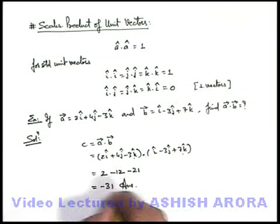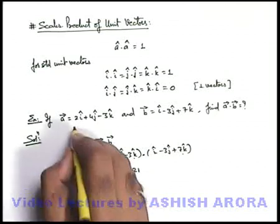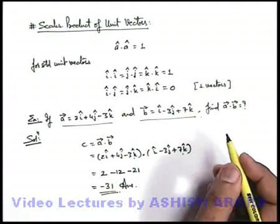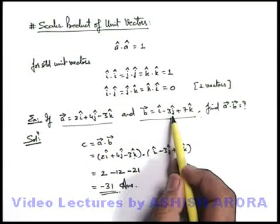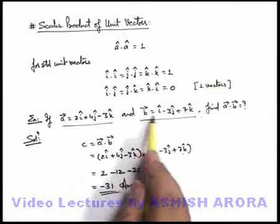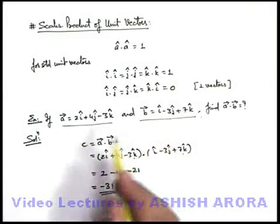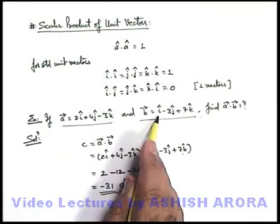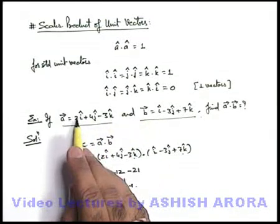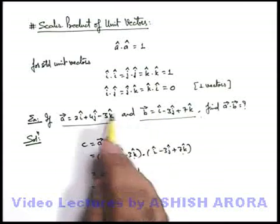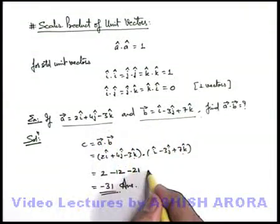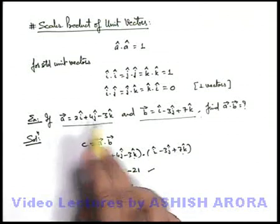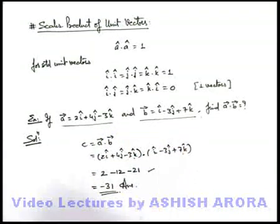So −31 is the dot product of vector A and vector B. For any case when vectors are given in unit vector form, you can simply multiply the coefficients of corresponding unit vectors — i with i gives 2, j with j gives −12, k with k gives −21 — and take the summation to get the dot product.